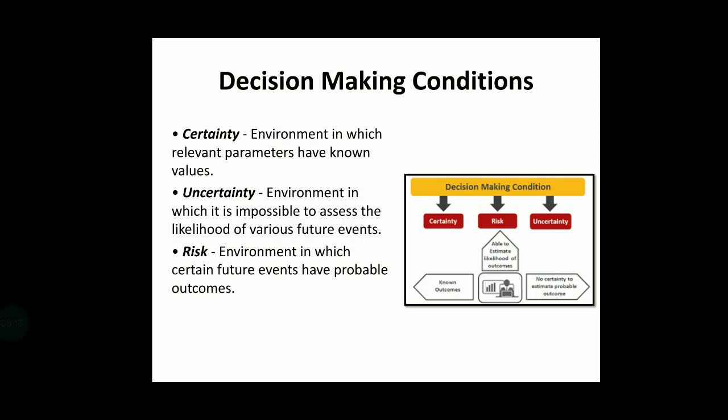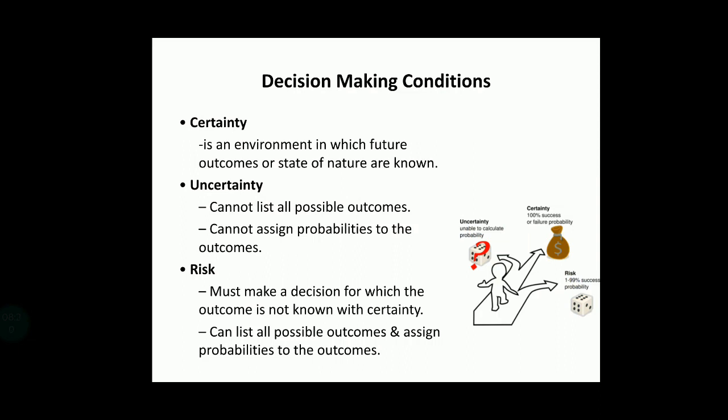The second condition is decision making under uncertainty — an environment in which it is impossible to assess the likelihood of various future events. The third is decision making under risk — where certain future events have probabilistic outcomes. Under uncertainty you cannot list all possible outcomes or assign probabilities; under risk you can list all possible outcomes and assign probabilities to them.